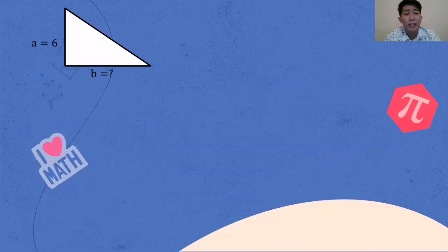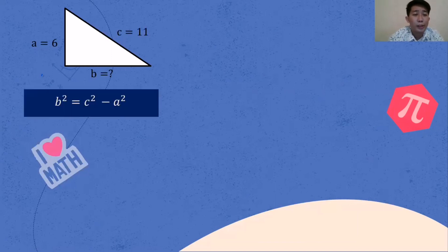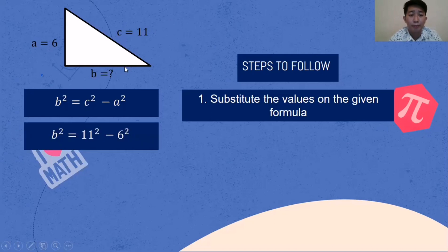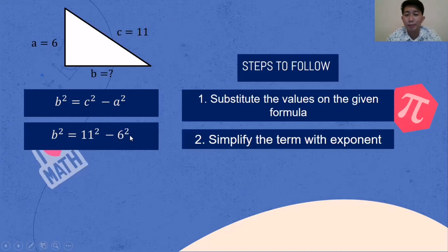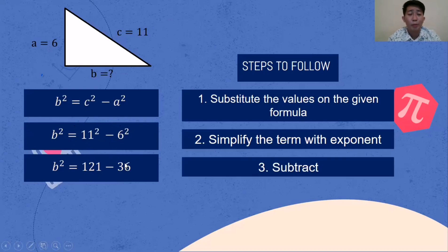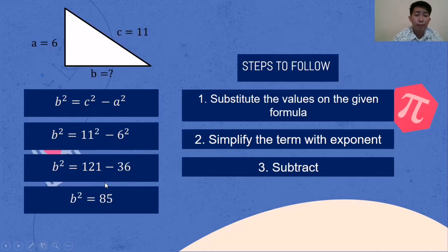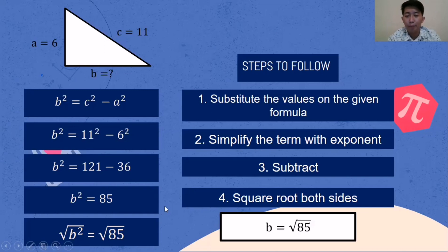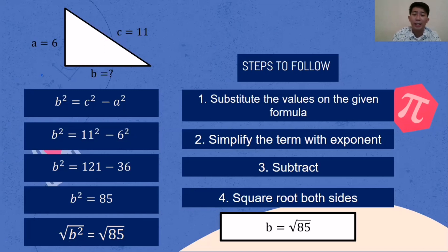Another example: A is 6, B is missing, and C is 11. We use the formula B squared equals C squared minus A squared. Substitute: C is 11 and A is 6. Simplify: 11 times 11 is 121, and 6 times 6 is 36. Subtract: 121 minus 36 is 85. Square root both sides. Since 85 is not a perfect square and has no factor that is a perfect square, the final answer is B equals the square root of 85.